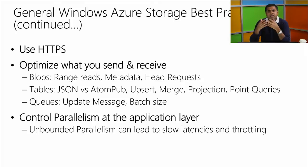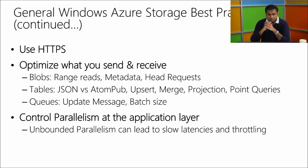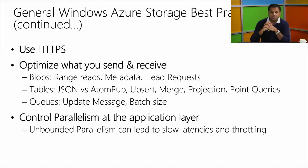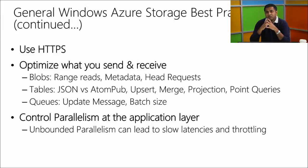Where you're only interested in metadata, issue HEAD requests rather than getting the content, and use metadata while listing to filter blobs. For tables, we released JSON in October — it provides up to 70% reduction in bandwidth. JSON in OData has multiple types: no metadata, minimal metadata, and full metadata. No metadata is best for conserving bytes over the wire. Use upsert wherever you want to insert-if-not-exists or update-if-exists, rather than issuing two separate requests.